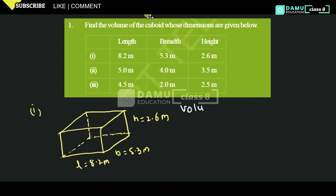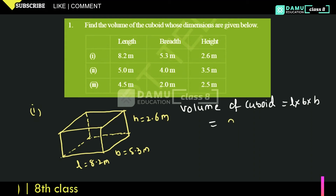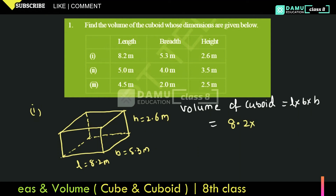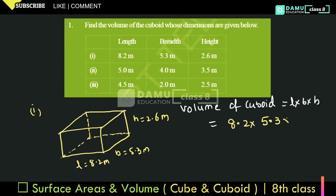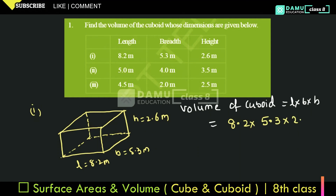Volume of a cuboid — a cuboid means only opposite sides are equal. So volume of cuboid is equal to length into breadth into height. Here, length is 8.2, breadth is 5.3, and height is 2.6.